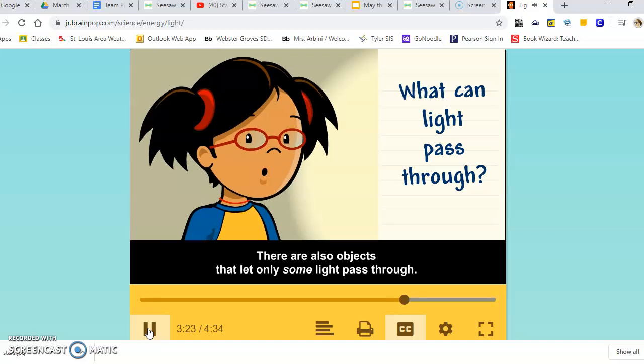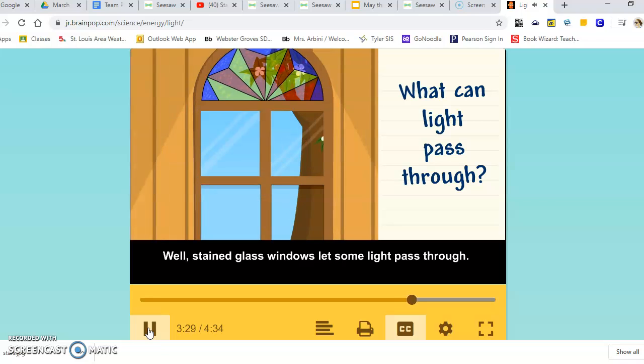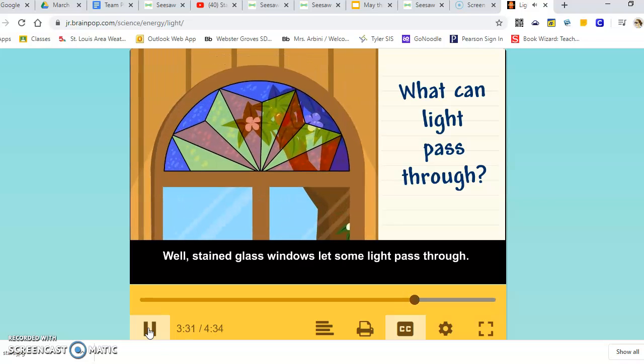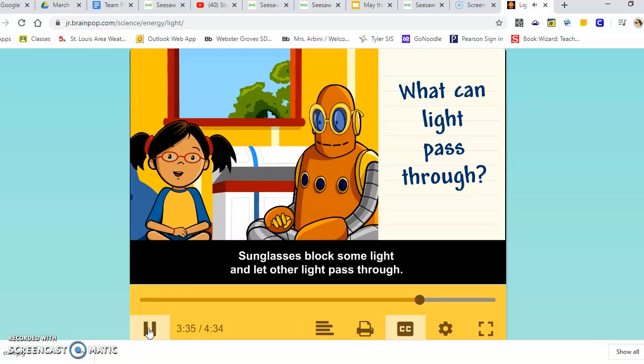There are also objects that let only some light pass through. Stained glass windows let some light pass through. Right, Moby. Sunglasses block some light and let other light pass through.